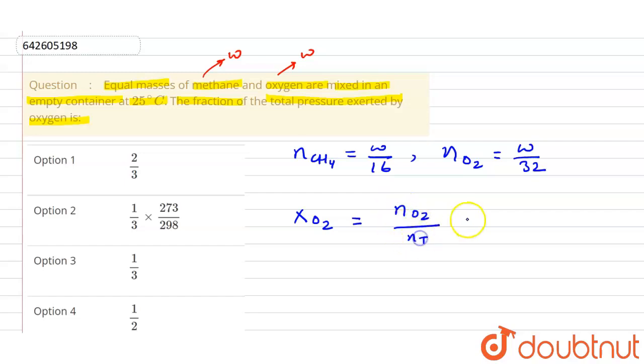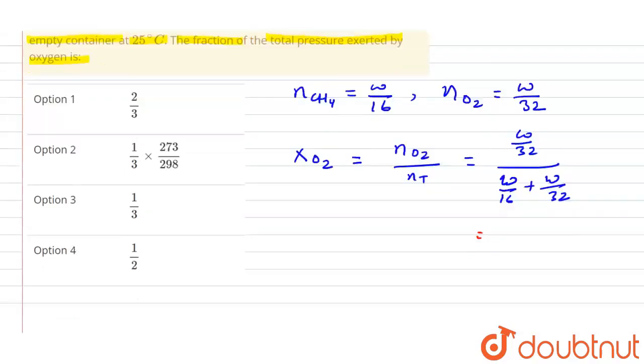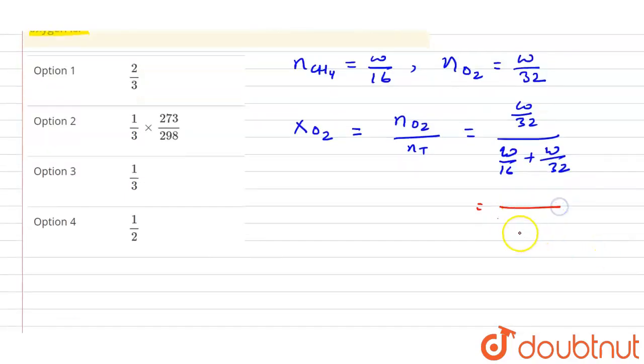So that would be equal to w/32 divided by (w/16 + w/32). Now take the LCM here - if you take the LCM in the denominator, what will be the LCM? LCM will be 32, so it will be multiplied by 2: 2w + w, so it will be 3 times w. And it will be w/32.